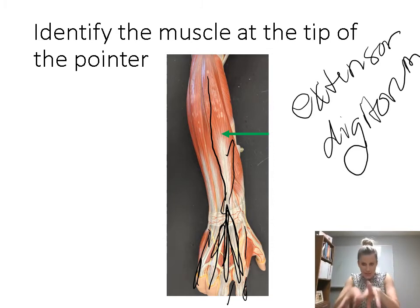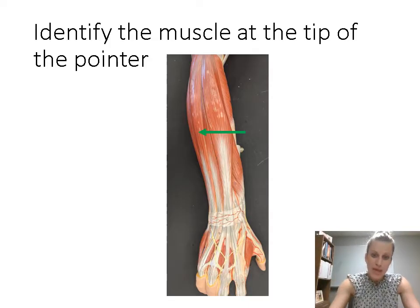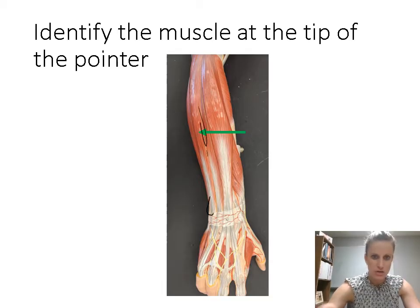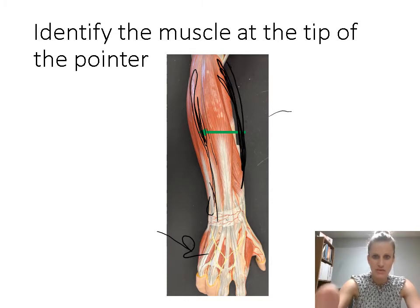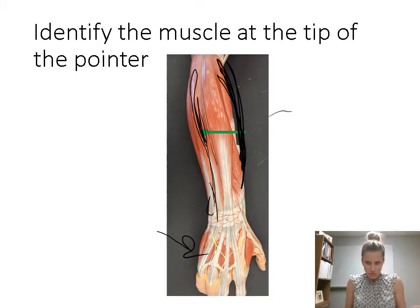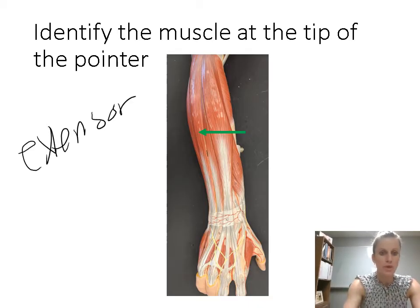This is like the one in the leg — the extensor digitorum longus with those tendons going down towards the toes. This is the one in the back of the hand: extensor digitorum. There are muscles on either side of the extensor digitorum that you need to know — one on the pinky side and one on the thumb side. This model is missing the thumb-side muscle. The one on the pinky side is the extensor carpi ulnaris.